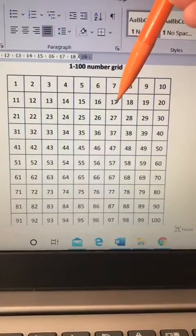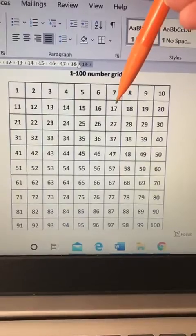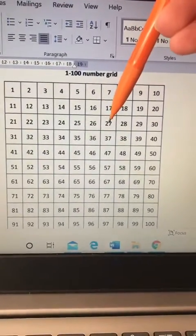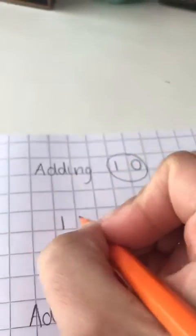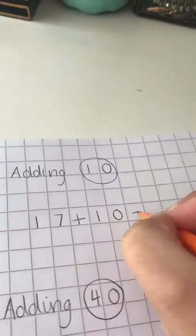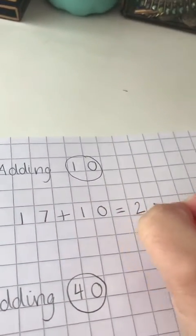So if I were trying to do 17 plus 10, I would move down one whole row to 27. So my first sum can be 17 plus 10 equals 27.